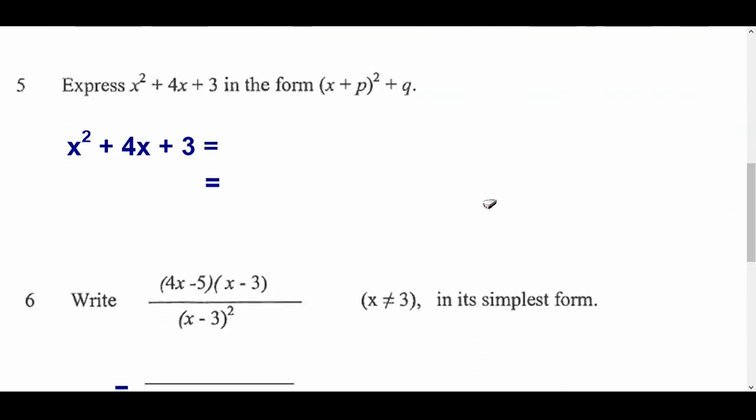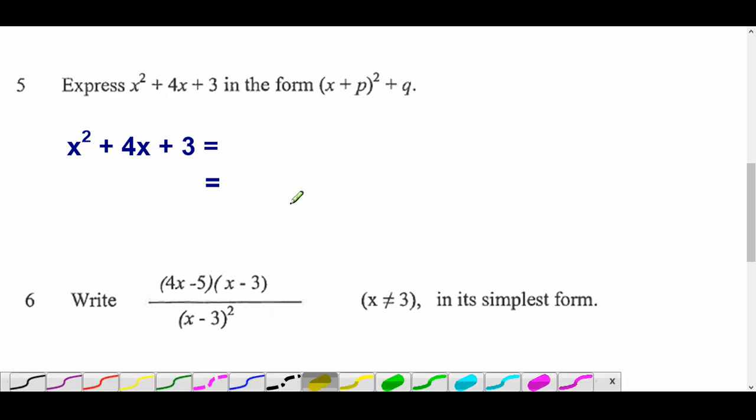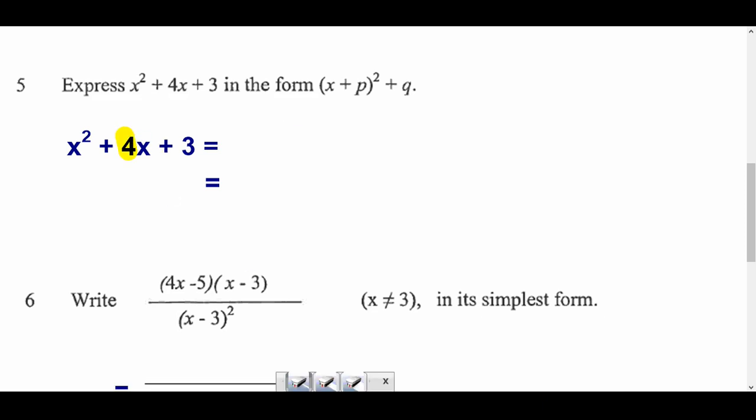Right, question 5. Completed square form. So, basically, we have to write it with a bracket and a squared, and then a plus or minus at the end. Now, the way to get the part in the bracket, and again, I'm only going to do one example here. If you find these tricky, go back and look at the video lessons on actually completing the square. But you half this bit here to get the bit in the bracket, this bit at the start here. So, we're going to half that and get x plus 2 squared.